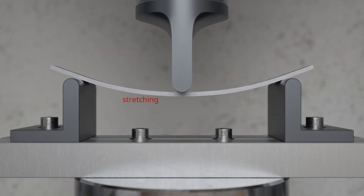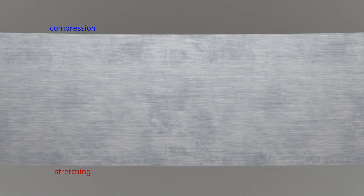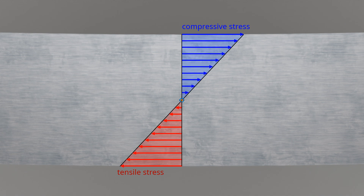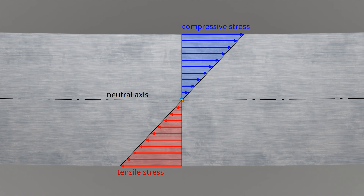This bending moment causes the material to be stretched on the outside and compressed on the inside of the curvature. As a result, the material is subjected to compressive stress on the inside and tensile stress on the outside. The stress values are highest at the surface layer of the material due to the maximum compression or strain, and decrease inwards. Within the elastic limit, where Hooke's law is obeyed, this results in a linear stress distribution. The material remains unstressed at the transition from tensile to compressive stress — this characterizes the so-called neutral axis. For materials that react equally to tensile and compressive stress, the neutral axis runs through the geometric center of gravity of the specimen cross-section, and the tensile and compressive stresses are distributed identically over the cross-section.